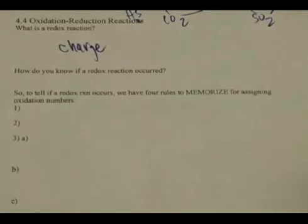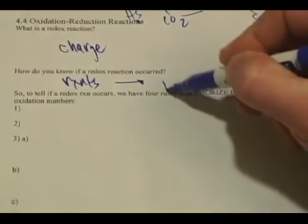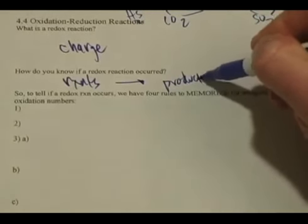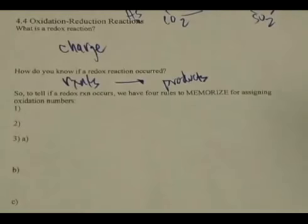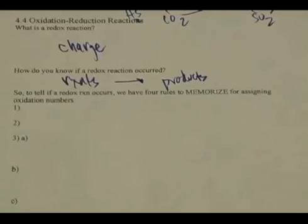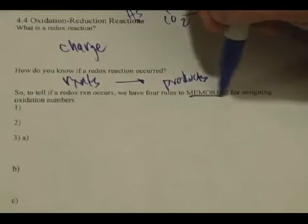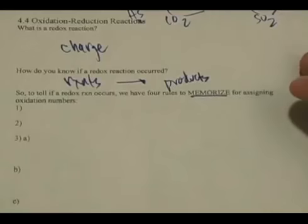How do you know if a redox reaction occurred? Well, you look at the charges of the ions on the reactants side, and you look at the charge of the products on the products side, and you ask, was there a change? The way that we can find out if there's a change or not is by using some arbitrary rules that you'll memorize, that can tell you what the charges are of the reactants and what the charges are of the products. To tell if a redox reaction occurs, we have rules to memorize for assigning oxidation numbers.